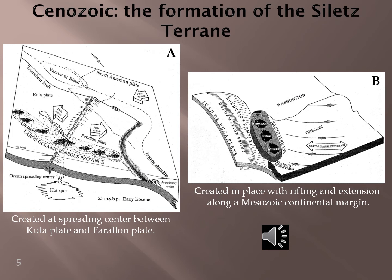Two hypotheses prevailed for the formation of Siletzia that underlays the coast range and Willamette Valley: either they began as ocean crust and a volcanic archipelago some distance offshore, or from eruptions close to the continental margin. Hypothesis A states that multiple eruptions built seamounts and a volcanic plateau carried by the Farallon Plate to collide with and accrete to North America. Following accretion, the old subduction trench was abandoned and Cascadia subduction was re-established 90 to 110 miles offshore. Hypothesis B is simpler — created in place with rifting and extension along a Mesozoic continental margin along the Farallon and Kula Plates. At this time, the preponderance of evidence supports Hypothesis A.